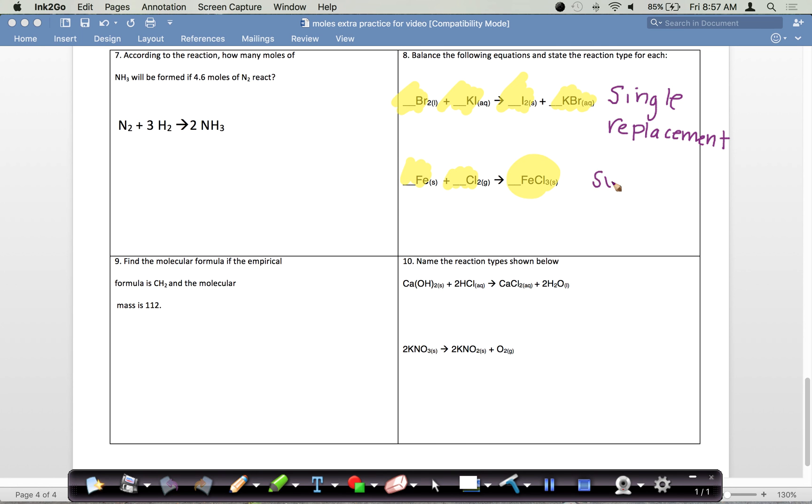On the next question, I notice that I have element and element making one product, one compound, so I'm going to call this reaction synthesis because I'm making something bigger. For this reaction, I have compound, compound, compound, compound—I call this double replacement because I have double compounds on each side. And for this one, I have one big piece breaking up into two smaller pieces. That would be decomposition.